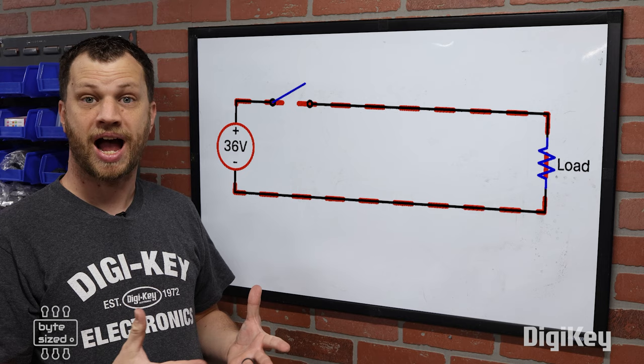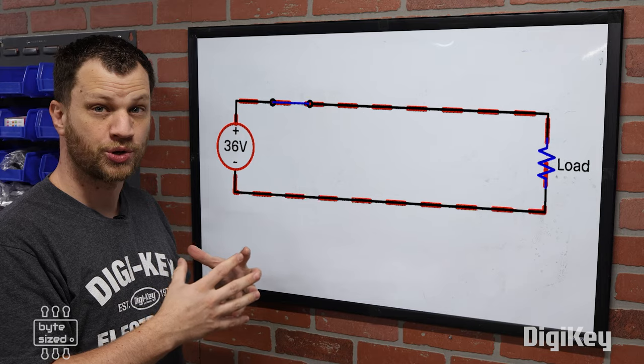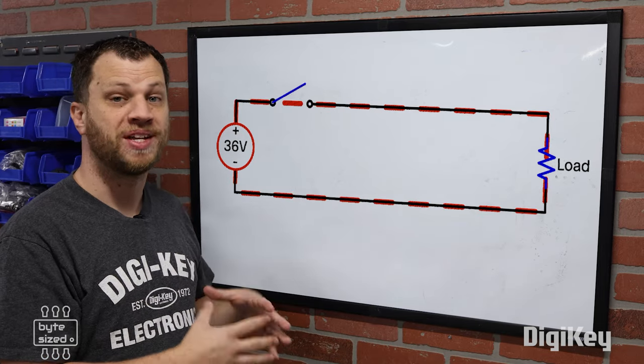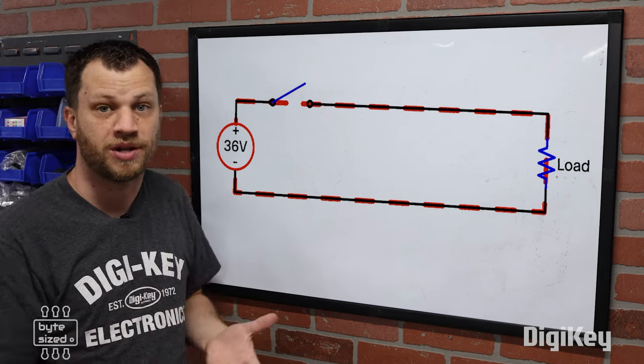Let's say for example, I close the switch for one second and then I open it for two seconds. So the switch is closed one third of the time, which means on average my load will see one third of the input voltage. In this case, that would be 12 volts.